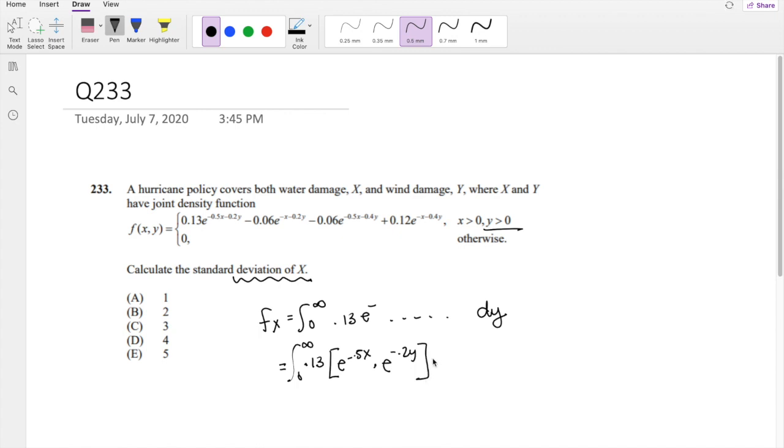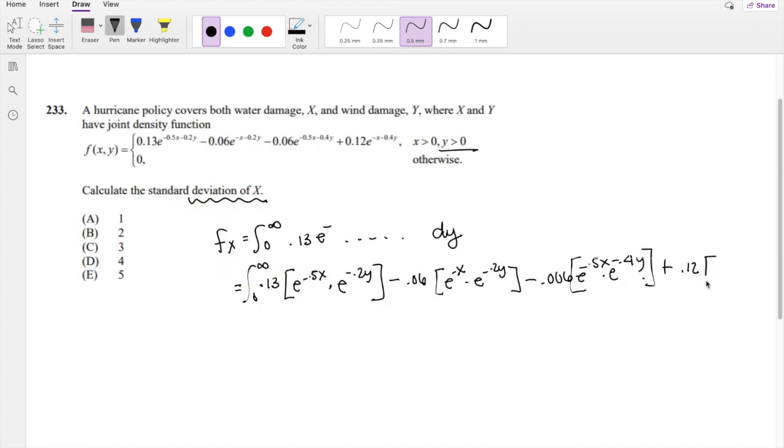And likewise, you can do that for all of them. Minus 0.06 e to the negative x times e to the negative 0.2y. Minus 0.006 e to the negative 0.5x minus 0.4y. 0.12 e to the negative x times e to negative 0.4y.